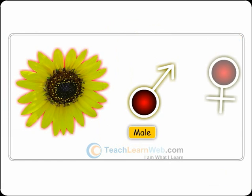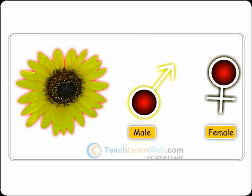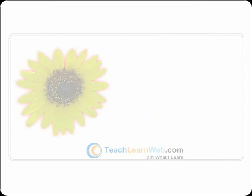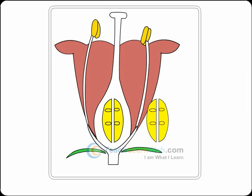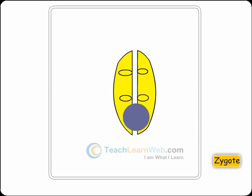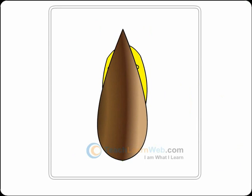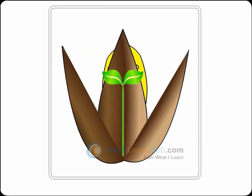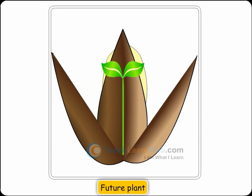Male and female gametes fuse with each other by the process of fertilization to form a zygote. Zygote develops into an embryo, the future plant.